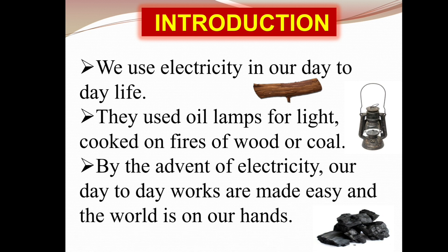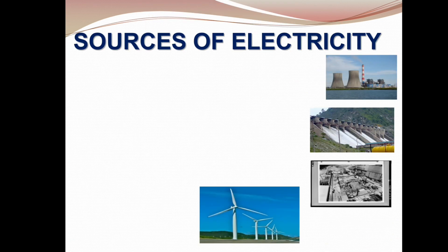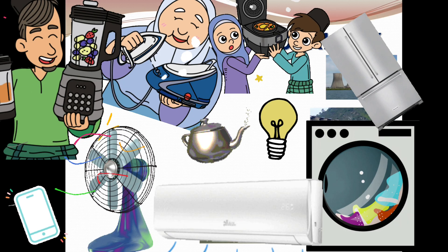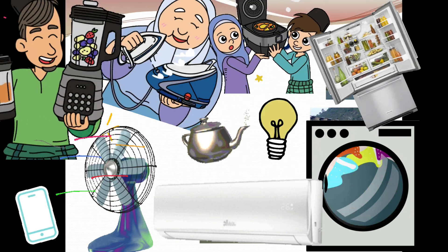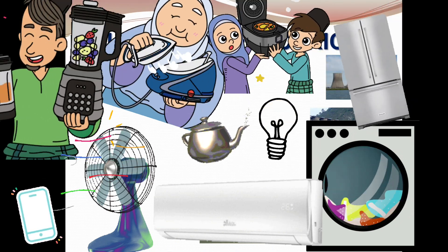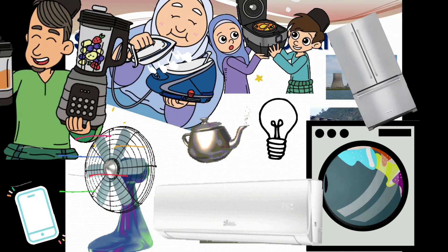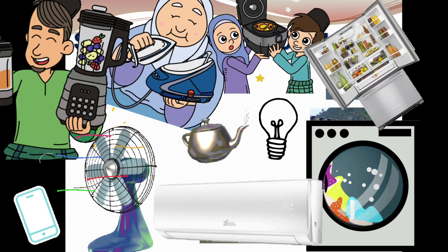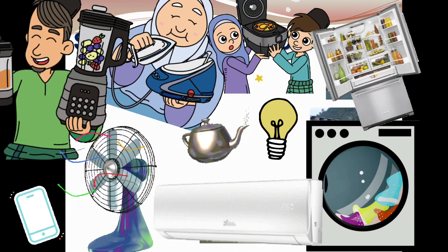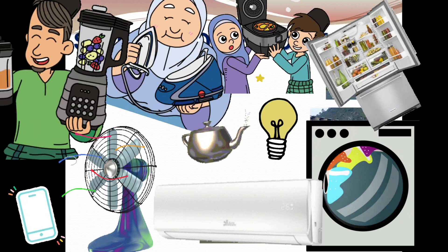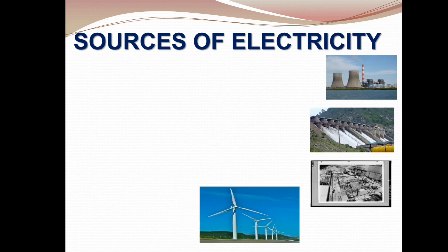Can you list out the electrical appliances used in your home? Yes, we use iron box, electric kettle, light, fan, refrigerator, air conditioner. All these are some of the electrical appliances that you use in your home. The first thing we are going to discuss is about the sources of electricity.